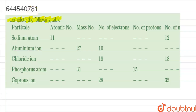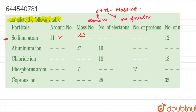We have been given a table to complete. For the sodium atom, the atomic number is 11 and the mass number is 23. The mass number equals the atomic number (Z) plus the number of neutrons (N). Since sodium is a neutral atom, the number of electrons equals the number of protons, both equal to 11.